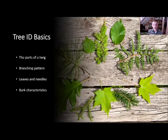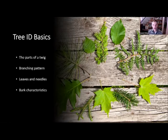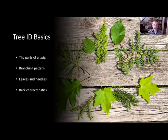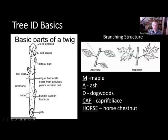We had a few questions about general rules of thumb for tree ID, especially in winter. As we've done on these in the past, we'll start with some tree ID basics. These will be helpful as you hear us describing features of the trees today, but also helpful poking around your woods on your own. We'll look at the parts of the twig, branching patterns, leaves and needles, and bark characteristics. This will also be really helpful for identifying tiny saplings.